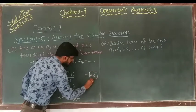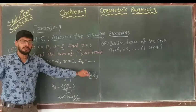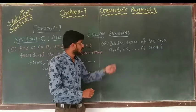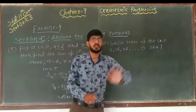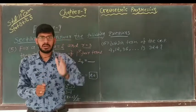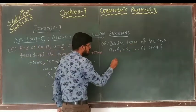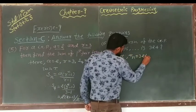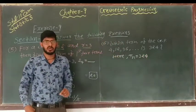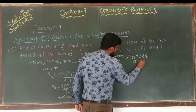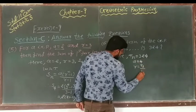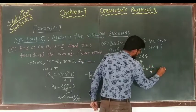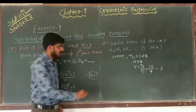Next, Question number 6: Which term of the GP 4, 12, 36, ... is 324? We need to find N. Here TN equals 324. The first term A equals 4. The common ratio R: T2 divided by T1 is 12 divided by 4, so R equals 3.